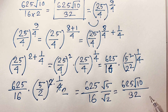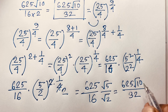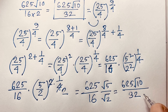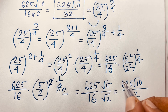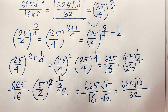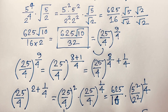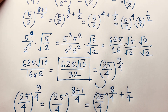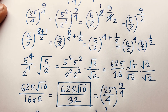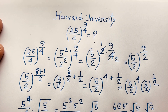This is the value of this question — a Harvard University admission-style radical maths question. The answer is 625√10 over 32. Thank you all. If you enjoyed this video, please subscribe to my channel for more interesting videos. Goodbye, take care.